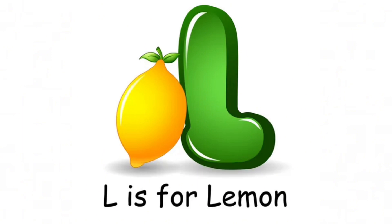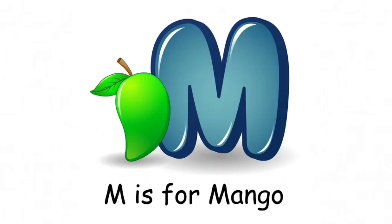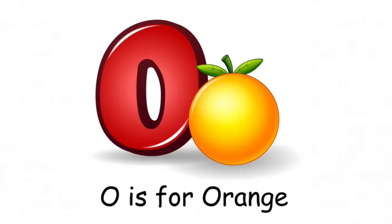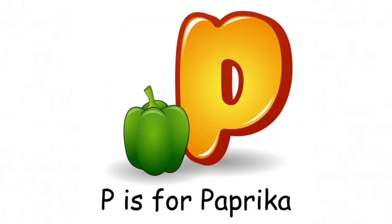L is for limon, M is for mango, N is for numbot, O is for orange, P is for paprika.